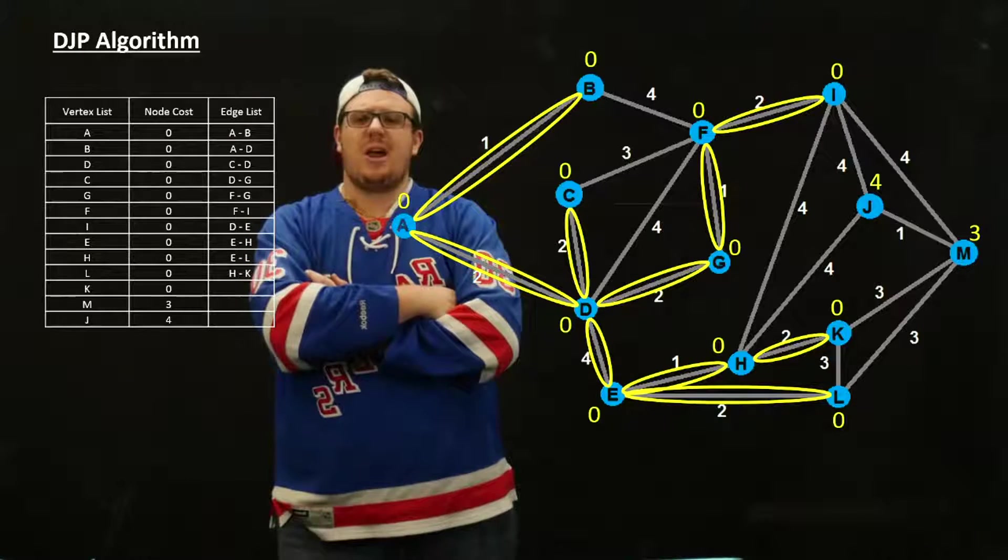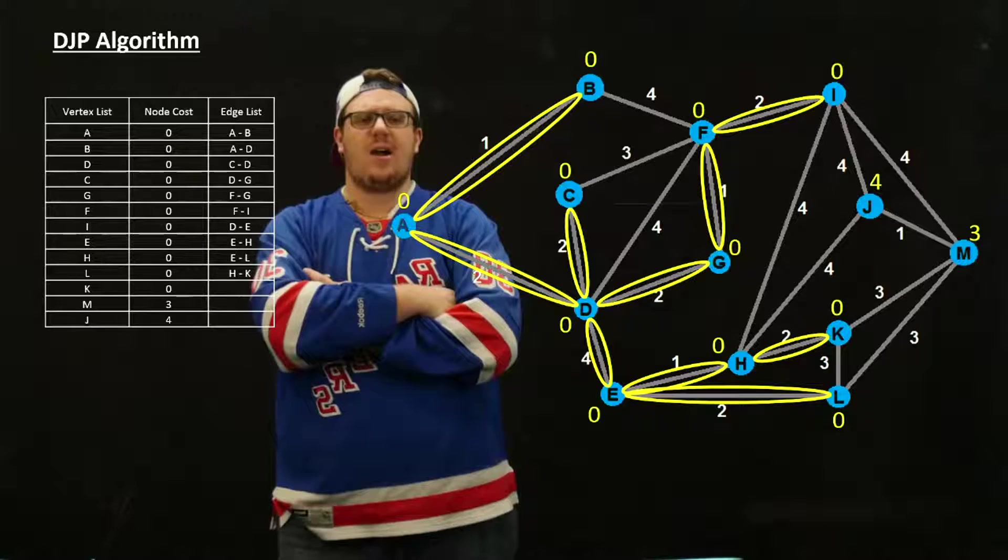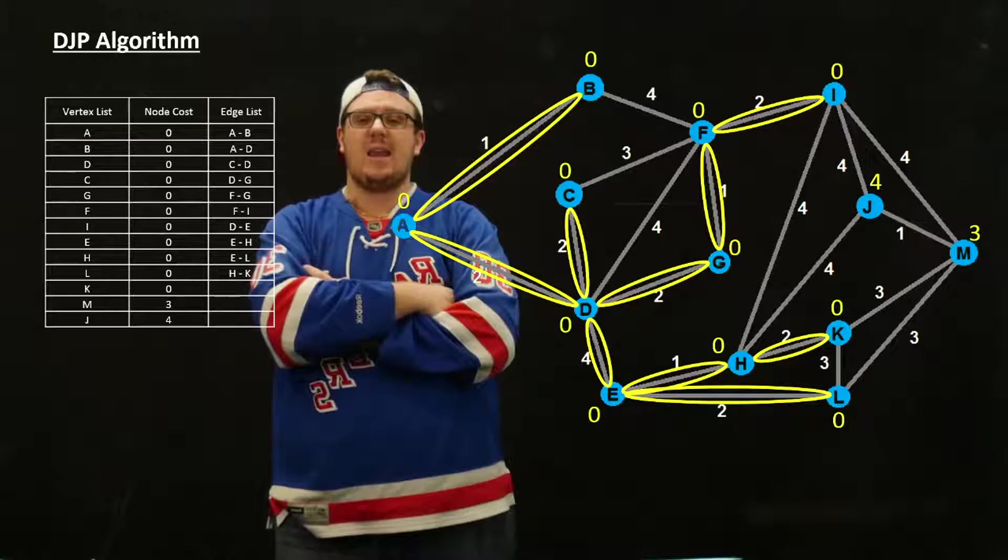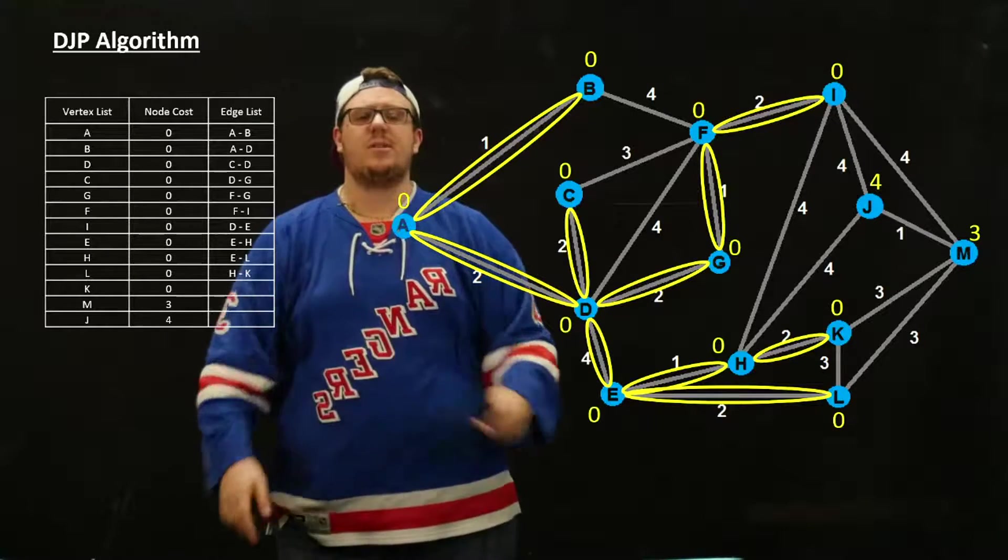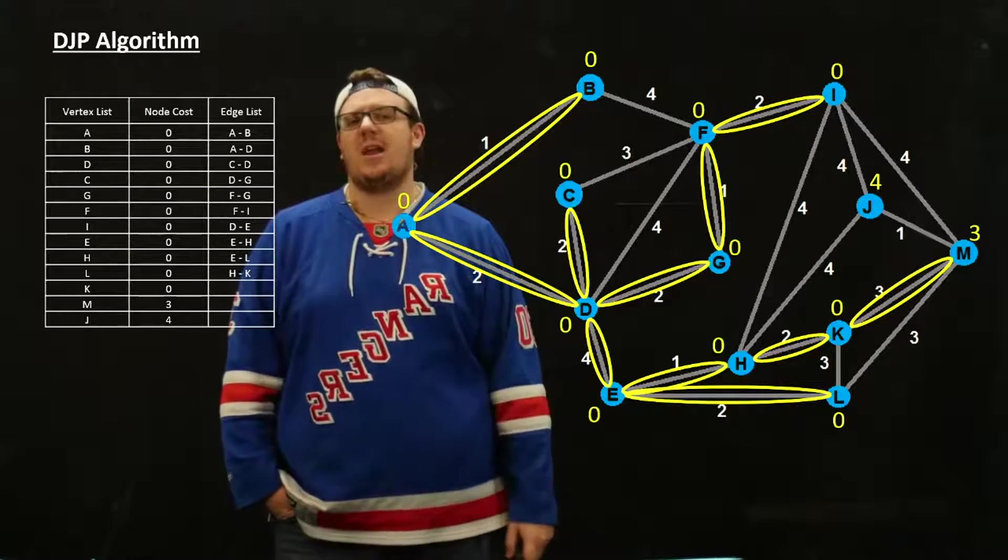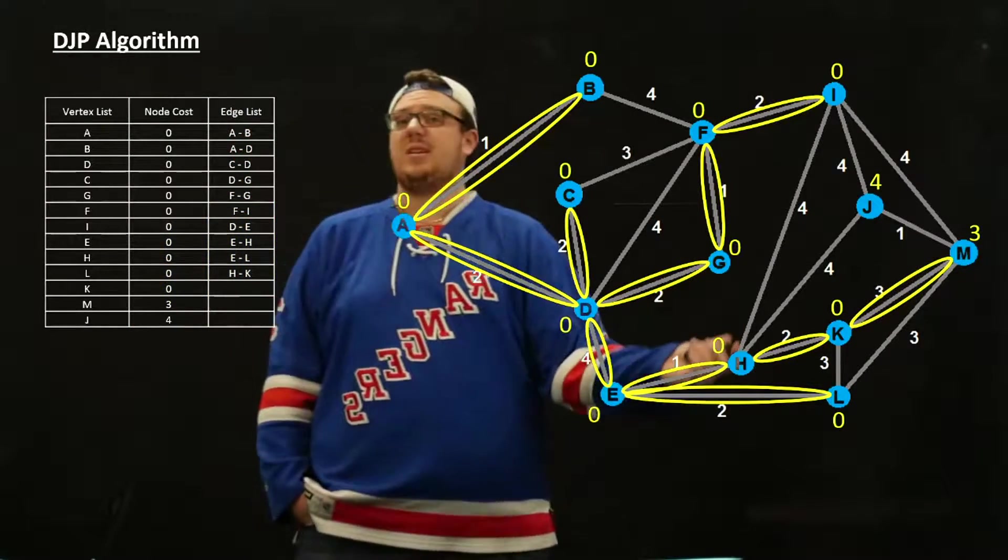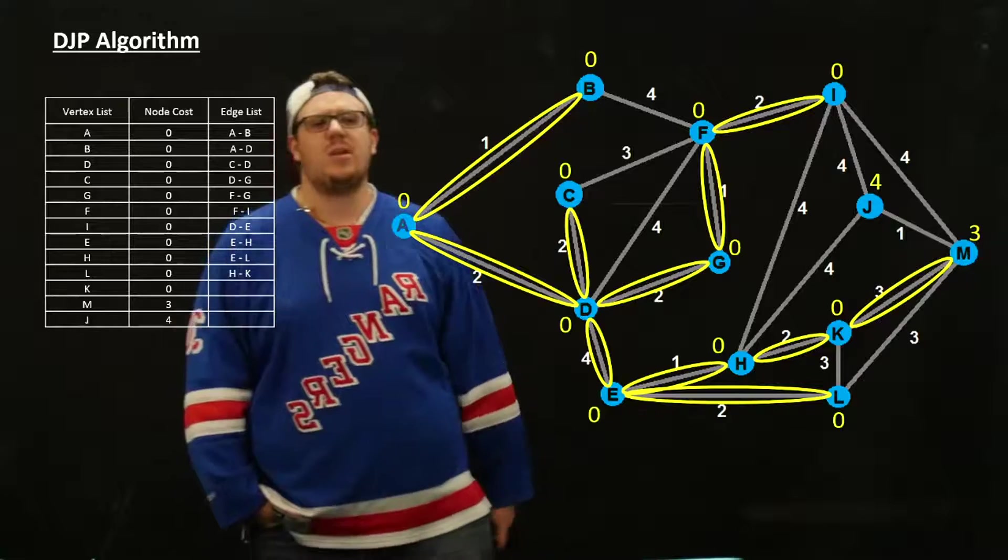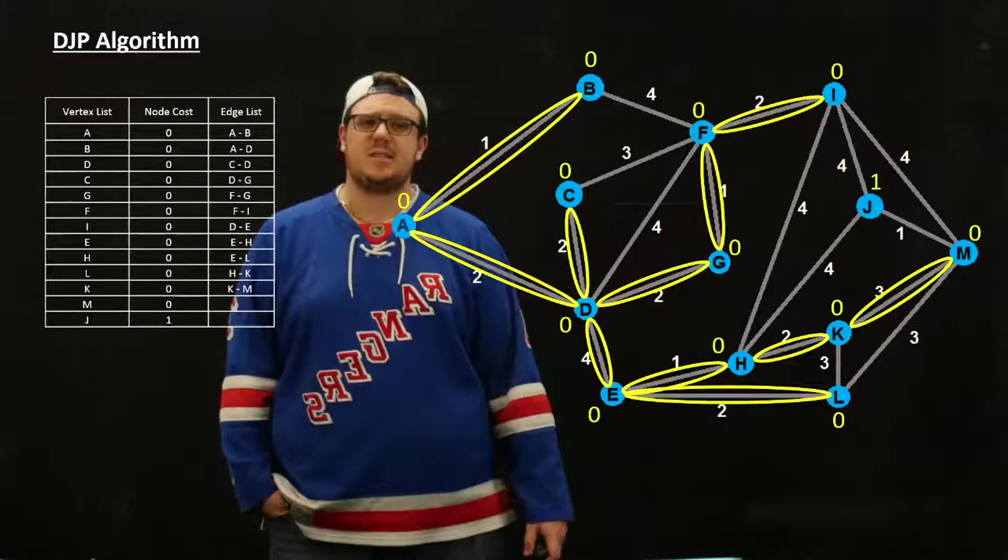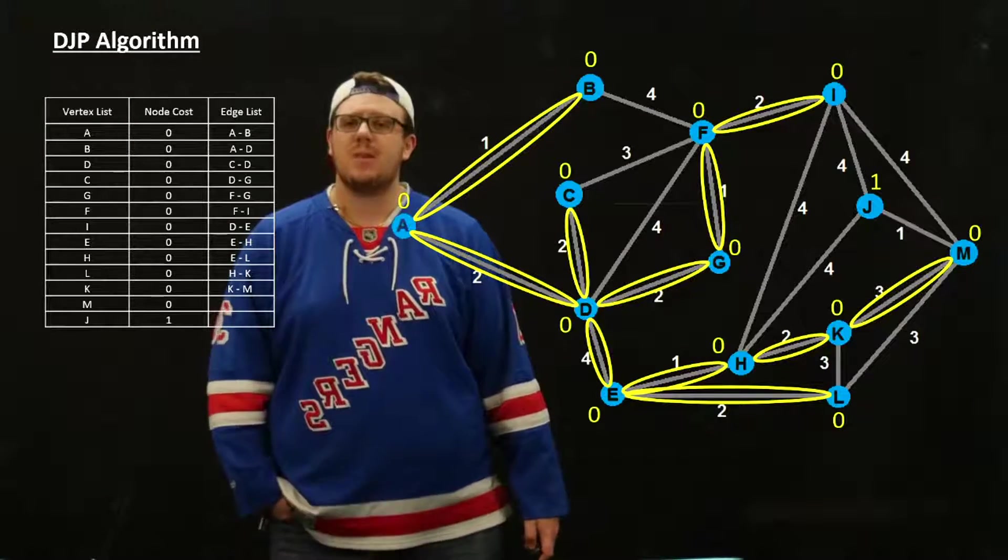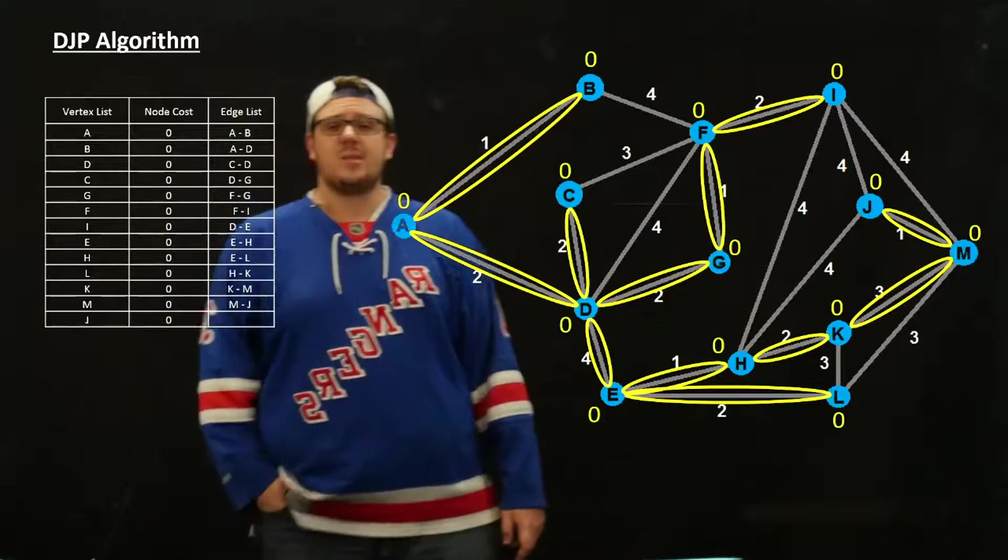The next thing we do is we have M. M is the next closest thing, so we add that into the graph. Since it is equidistant from K and L, it really doesn't matter which one we add in. We're just going to add in the one from K to M. We update M to be zero. And then the only thing left to add is the distance from J to M, which is 1. So we add that in, update J to zero. And at this point, we're done. We have all of our nodes in the graph.